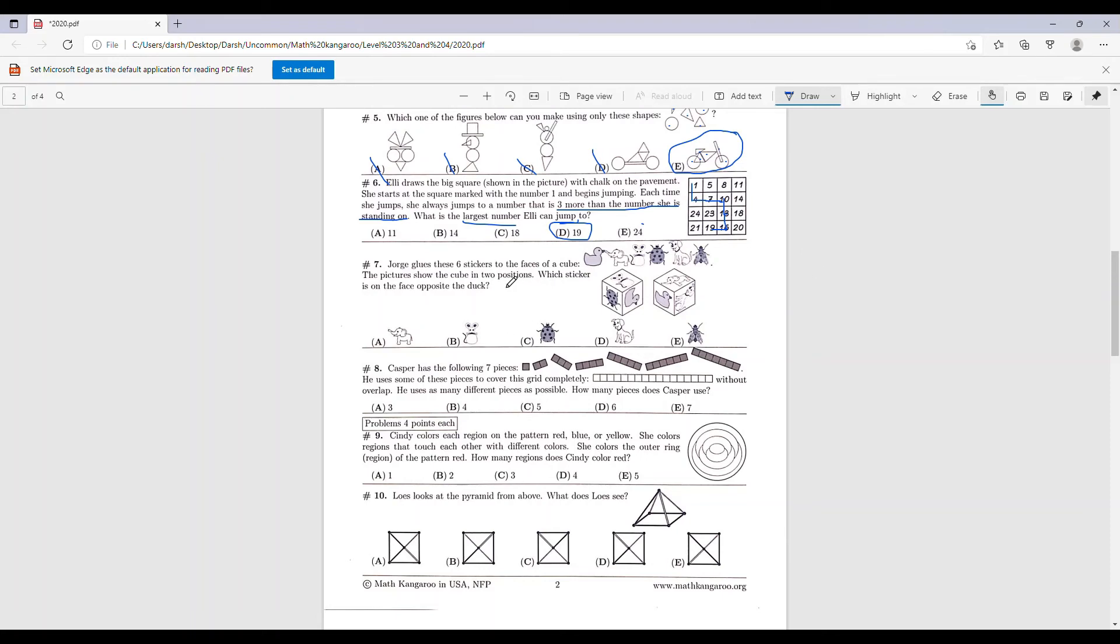Jorge glues the 6 stickers to the faces of a cube. The pictures show the cube in 2 positions. Which sticker is on the face opposite the duck? Let's find the pairs first to see which one is opposite to the duck. So we see the duck is first over here, and then we find it over here face up. So we know we're going to tilt it once this way, we're going to tilt it once that way, so it's going to go down.